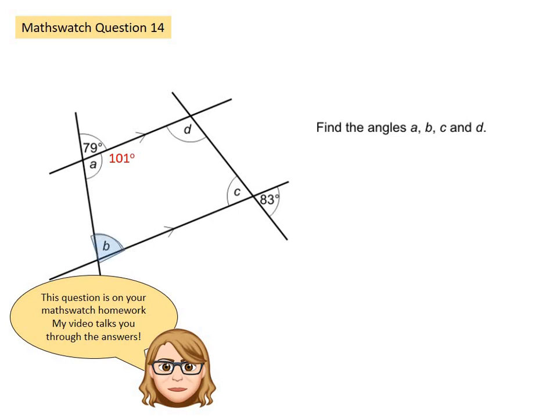B is corresponding with the angle at 79 degrees so B must be 79. C is forming an X shape, this is called vertically opposite. Vertically opposite angles are equal so C is the same which is 83. I can then add these angles together and take that away from 360 degrees to leave me with D being 97 degrees. Again you're not asked to find a reason for your answer, you just need to work out the angle.